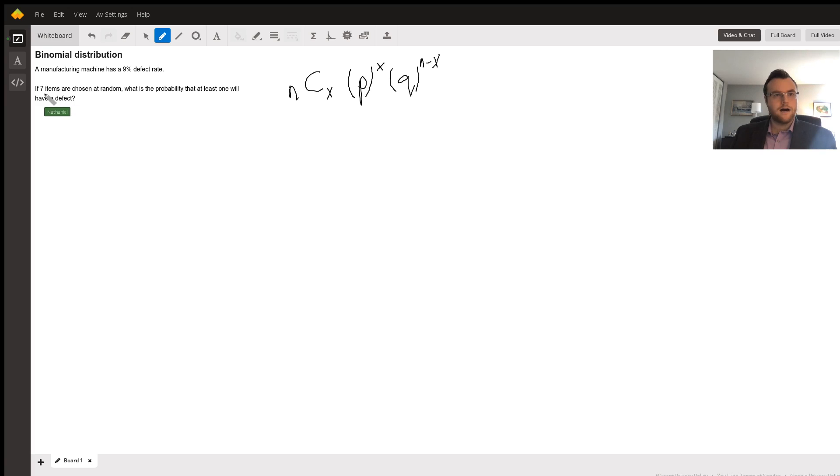So there is a fast way and a long way to do this problem. Let's go over the long way first. So we have 7 in our sample size, and we want to choose at least one to have a defect. So we have a probability of a defect at 0.09.